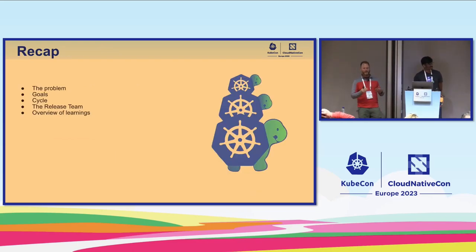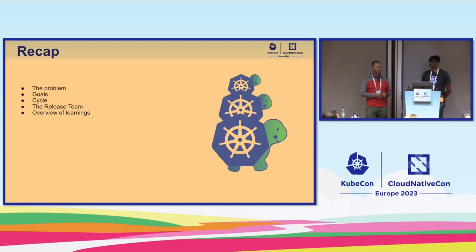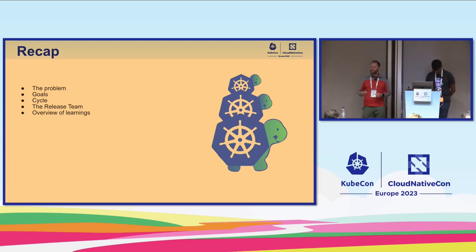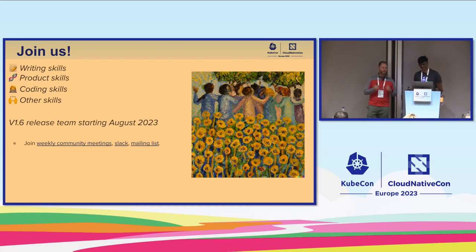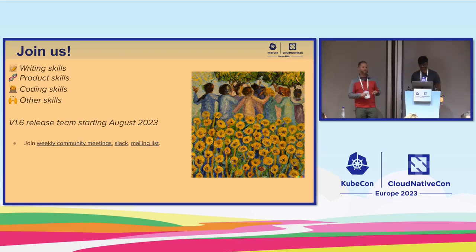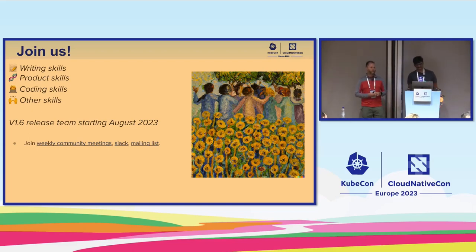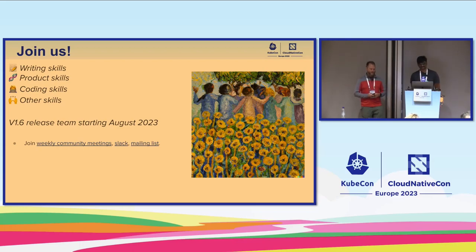To recap: the problem was unpredictable releases and knowledge transfer not happening — it was in people's heads. The maintainers and community developed a release cycle to mirror Kubernetes, documented the release team and tasks, and over time the release team will drive and improve the process to get releases out in a timely manner. The 1.6 release is coming up in August and we'd love to continue growing the community. We're looking for people who can write code, document, or run projects — any skill set. If you're interested, we have Slack, weekly office hours, or you can speak to Yuvaraj or myself about joining the team.